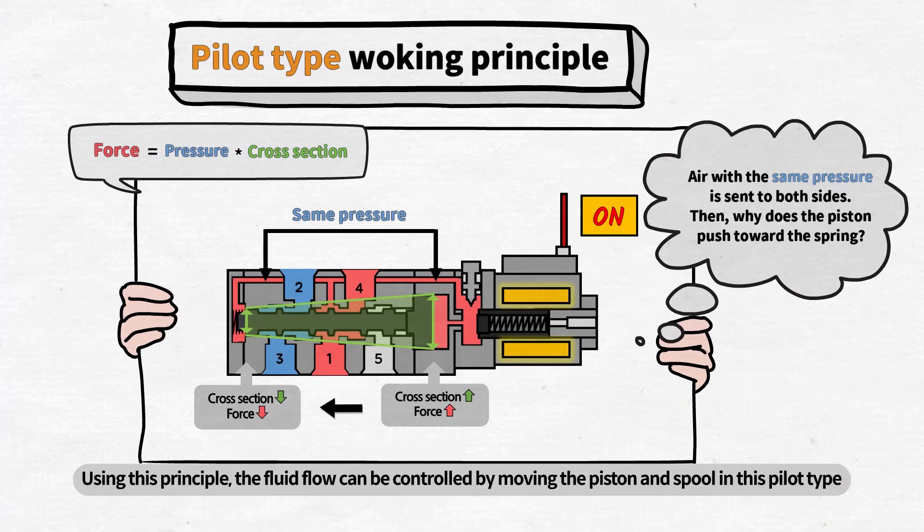That is why the piston and spool are pushed to the left. Using this principle, the fluid flow can be controlled by moving the piston and spool in this pilot type.